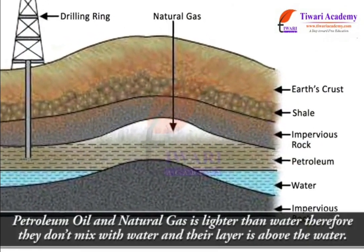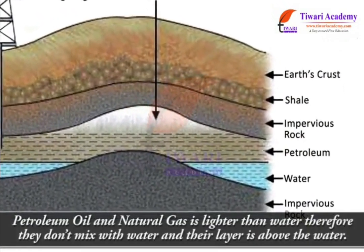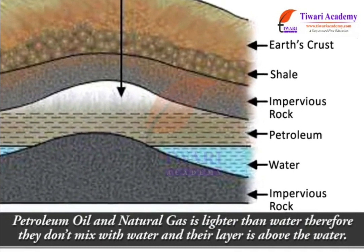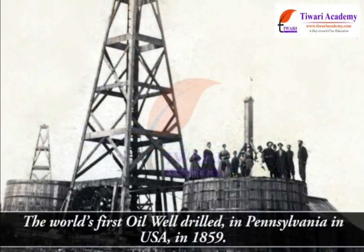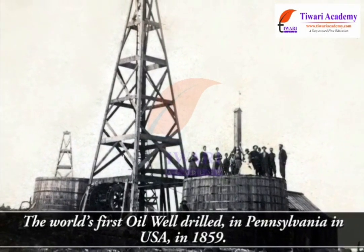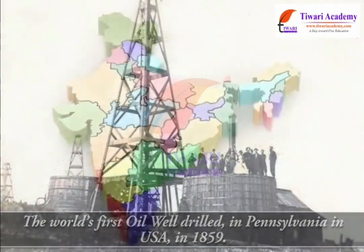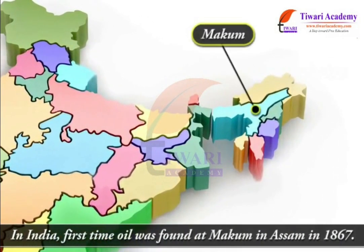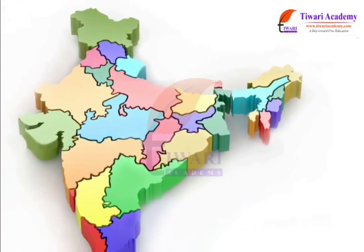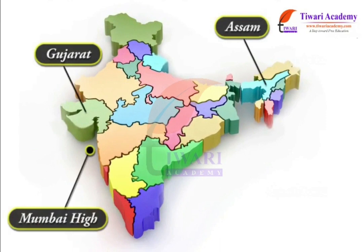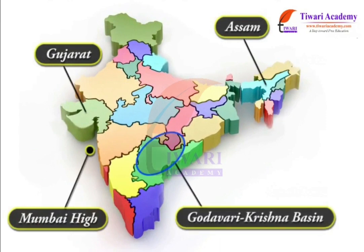Petroleum oil and natural gas are lighter than water and therefore do not mix with water, and their layer is above the water. The world's first oil well was drilled in Pennsylvania in USA in 1859. In India, oil was first found at Makoom in Assam in 1867. Now in India, oil is found in Assam, Gujarat, Mumbai High and in the river basins of Godavari and Krishna.